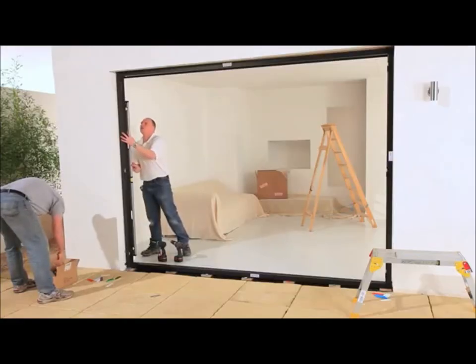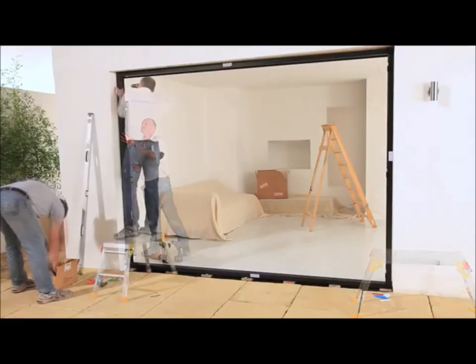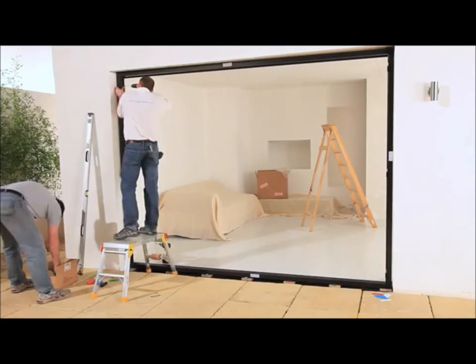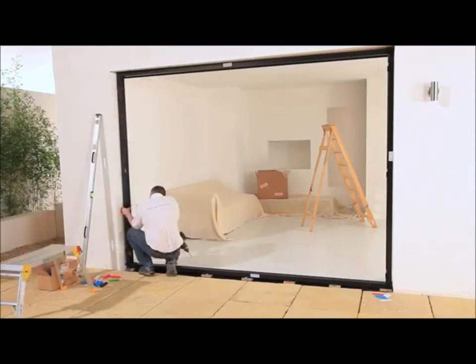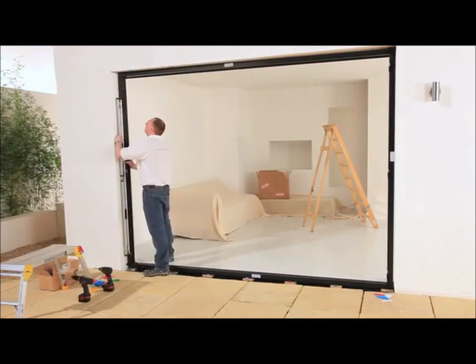Then, level vertically the jam and install the top fixing. Making sure the jam is not bowed, install the remaining fixings. Finally, check for straightness and level again.